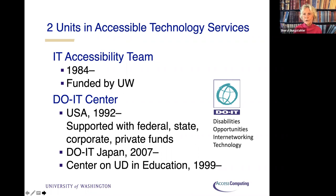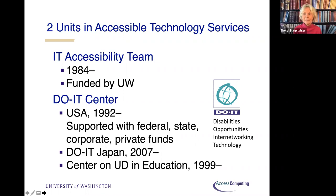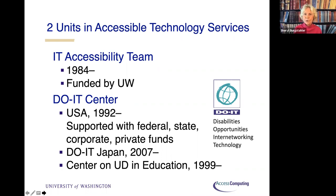All of the IT accessibility team efforts are funded by the University of Washington. Our goal is to make sure that IT procured, developed, and used is accessible to our students, faculty, staff, and campus visitors. We have another center as part of ATS called the DOIT Center, where DOIT stands for Disabilities, Opportunities, Inter-Networking, and Technology. This program started in 1992, supported with federal, state, corporate, and private funds. Those grant-funded projects allow us to stretch our activities beyond the UW borders.